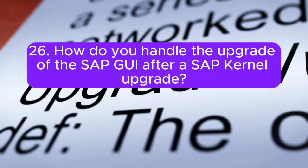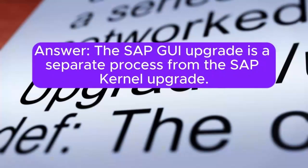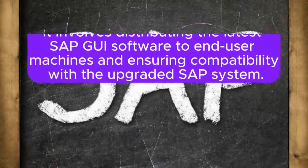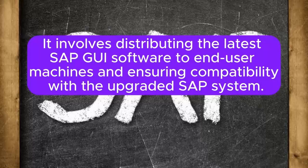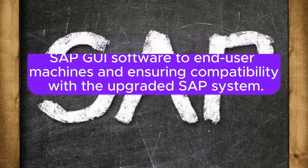26. How do you handle the upgrade of the SAP GUI after a SAP kernel upgrade? The SAP GUI upgrade is a separate process from the SAP kernel upgrade. It involves distributing the latest SAP GUI software to end-user machines and ensuring compatibility with the upgraded SAP system.